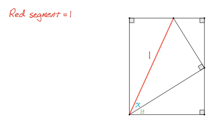Right off the bat, this angle right here is x plus y. Also we have parallel lines cut by a transversal — the red line is the transversal — so up here that angle is going to equal the angle that we marked, so that's also x plus y. The triangle that has angle x and hypotenuse one, the third angle there is going to be 90 minus x.